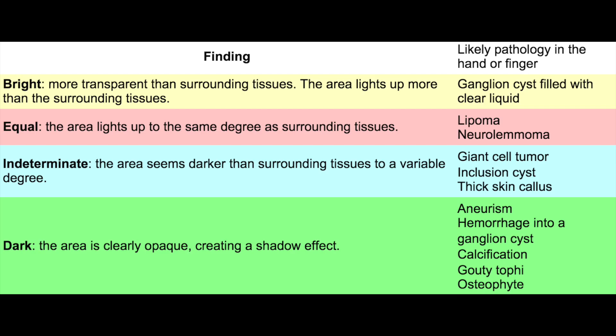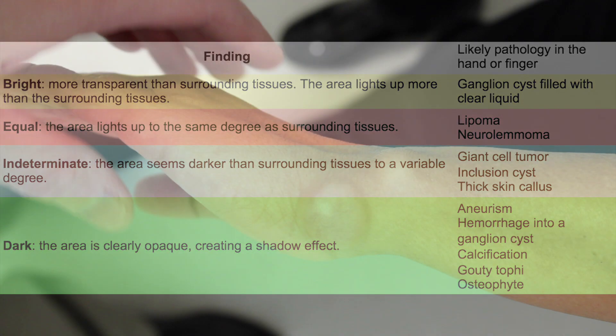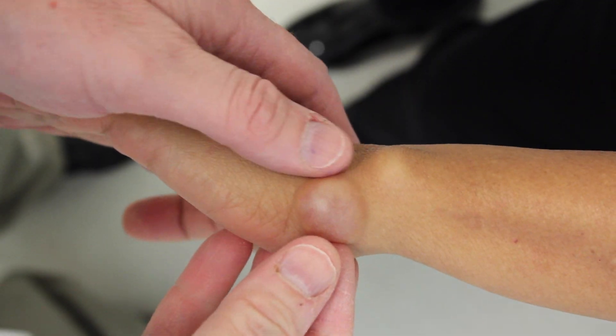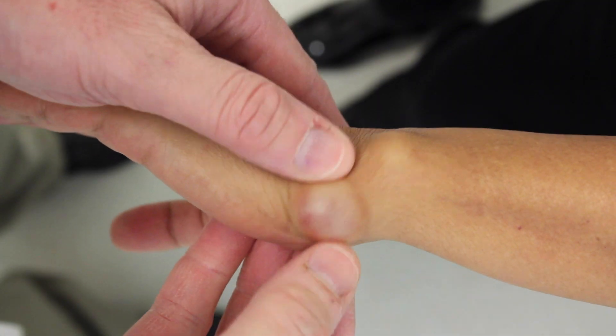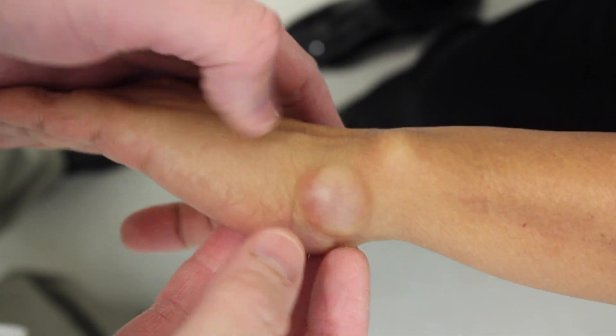A fluid-filled object will transmit light across and be very clear. Here you can see the wrist ganglion — it's very mobile and firm.